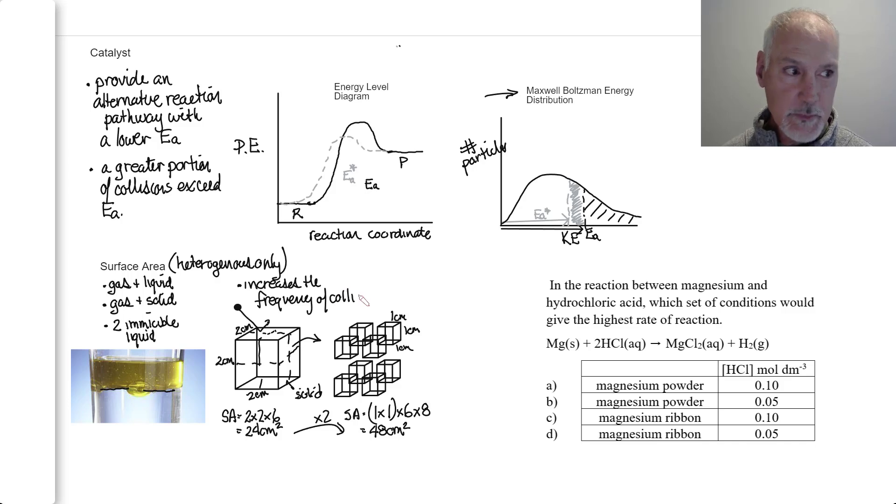Let's apply some of what we've learned in this multiple choice question. Here we're asked to determine which set of conditions would lead to the fastest reaction. From what we just covered on surface area, a powder has more surface area. And we also know concentration has an effect. The higher the concentration, the higher the rate. So my answer here would be A.